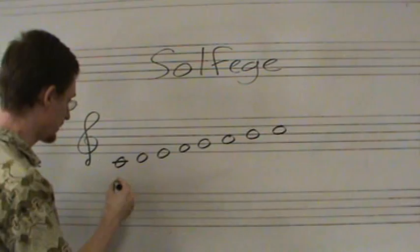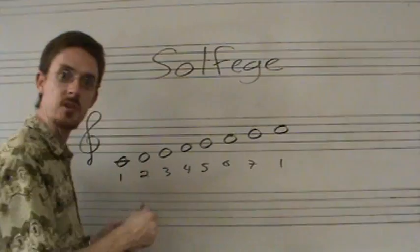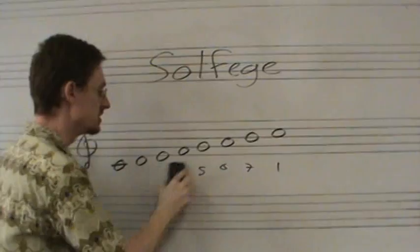I learned scale degree numbers first: one, two, three, four, five, six, seven, one — going back to the octave and recycling, just as it does back to C when you get there. That's another way. Solfege is yet another way to do that.